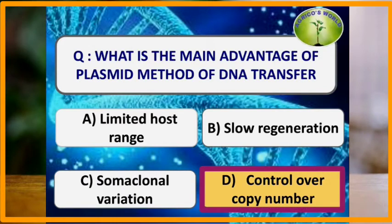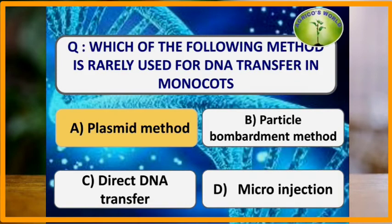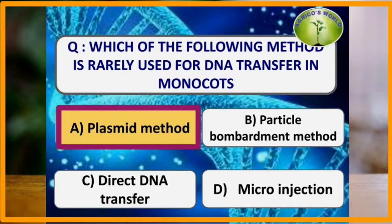What is the main advantage of the plasmid method of DNA transfer? The main advantage of the plasmid method of DNA transfer is the control over the copy number.